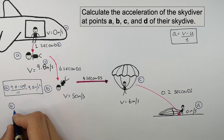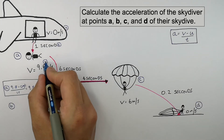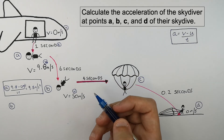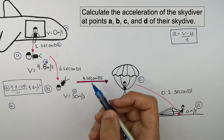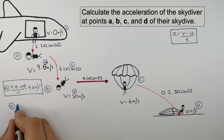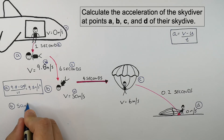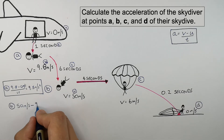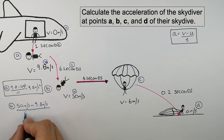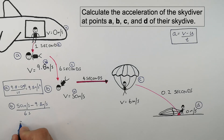At point B, the previous final velocity of 9.8 meters per second is now the initial velocity. Their final velocity is 50 meters per second, and the time taken to accelerate is six seconds. So acceleration equals V minus U over T: 50 minus 9.8, divided by 6 seconds, giving an acceleration of 6.7 meters per second squared.